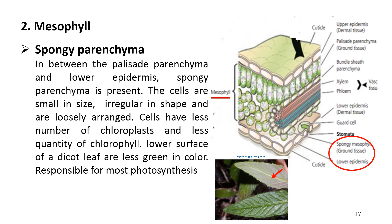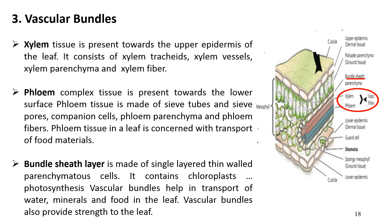Due to fewer chloroplasts, the lower surface of the dicot leaf will be less green in color compared to the upper surface. As mesophyll tissue — both palisade parenchyma and spongy parenchyma — contains chloroplasts and chlorophyll, these are concerned with the food-preparing process of photosynthesis. Vascular bundles represent the midrib and veins of a leaf.